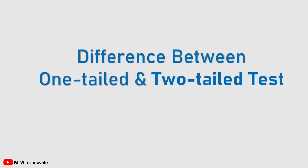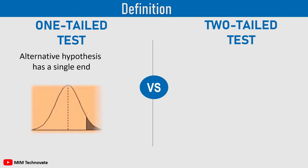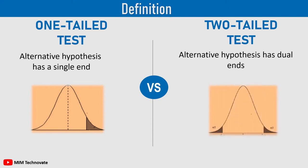Difference between one-tailed and two-tailed test. A one-tailed test, as the name suggests, is the statistical hypothesis test in which the alternative hypothesis has a single end. On the other hand, the two-tailed test implies the hypothesis test in which the alternative hypothesis has dual ends.